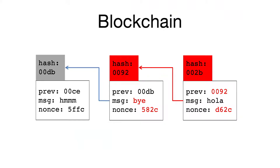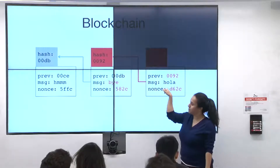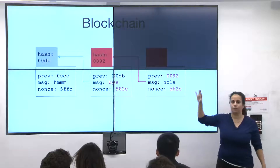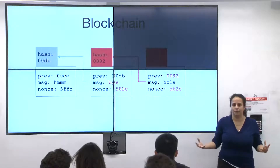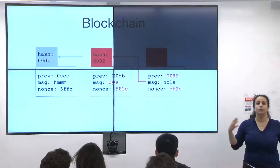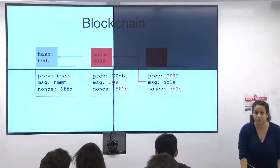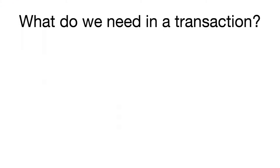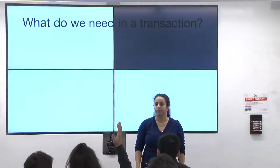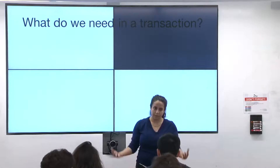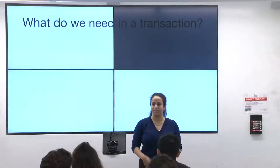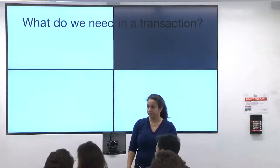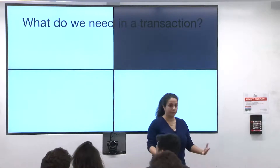Now let's go into a little more detail about what this message thing actually is. We've talked about the previous hash pointers, the nonce, and proof of work. But what actually goes inside a block? What goes inside a block are transactions — we're trying to build a payment system here. So what do we need in a transaction? Inputs and outputs. And at a higher semantic level: a sender, a receiver, an amount, a transaction ID, and a proof that it's a legitimate transaction.